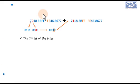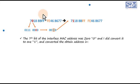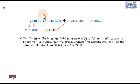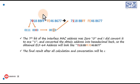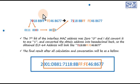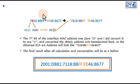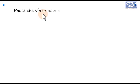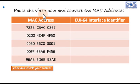The 7th bit of the interface MAC address was 0, and it was converted to 1, then converted back to hexadecimal. The resulting EUI-64 address looks like 7118:8BFF:A46:8677. Pause the video now and convert the MAC addresses yourself.